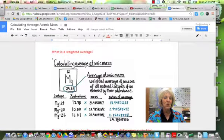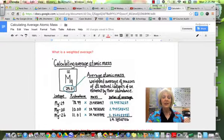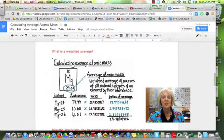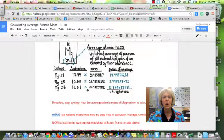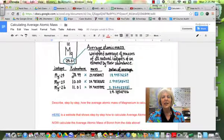So magnesium-24 is 78.99% of all the magnesium atoms in the universe. Magnesium-25 is 10% of all those atoms, all those isotopes of magnesium in the universe. And magnesium-26 is 11%. So what we do is we take the percent and we actually change that to a decimal before we do this math.